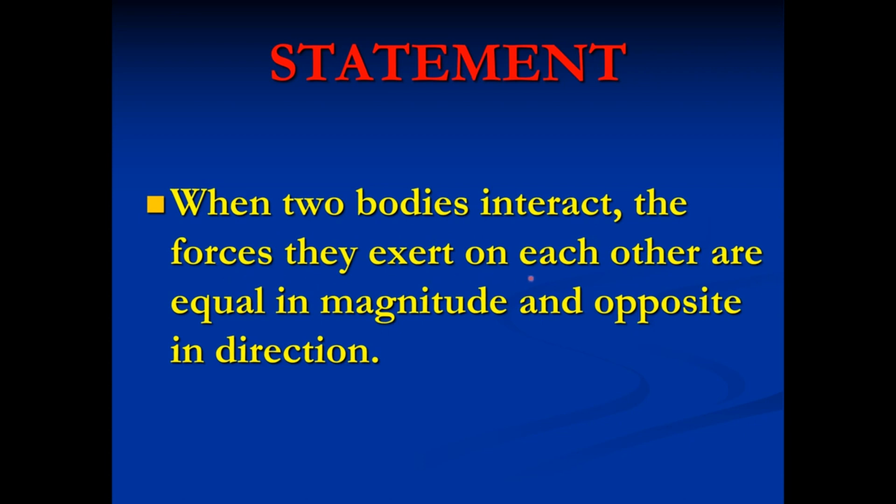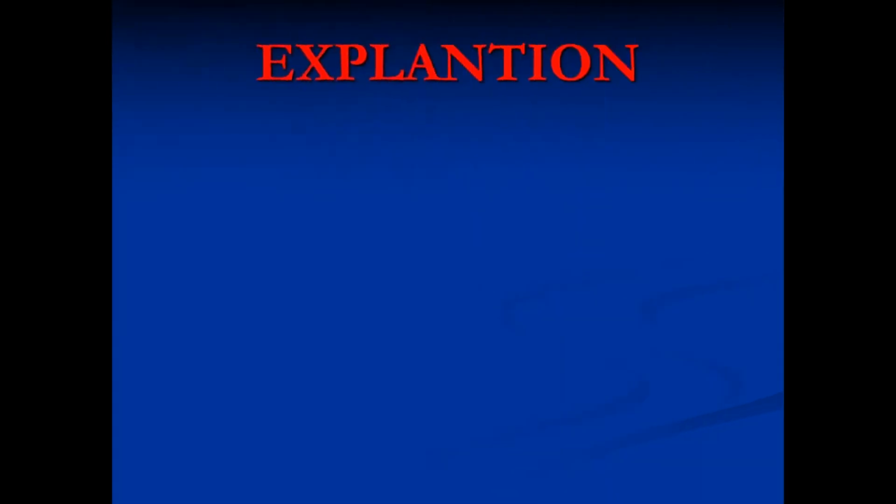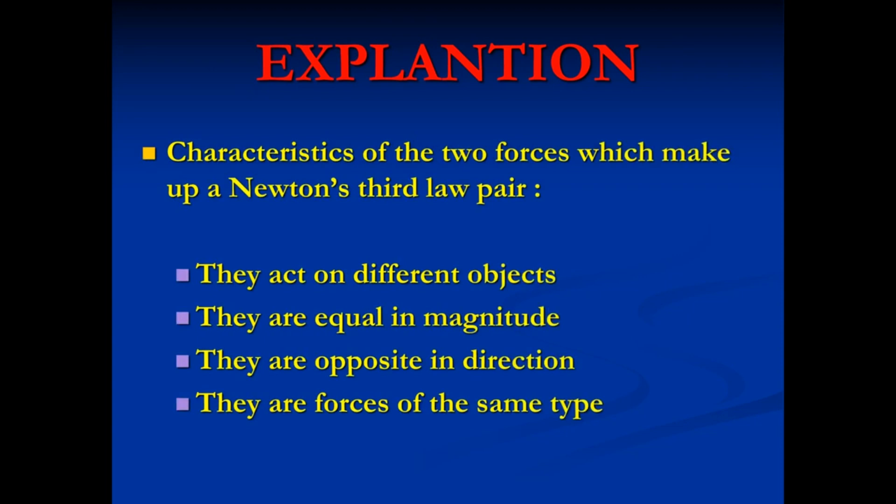Newton's third law of motion states when two bodies interact, the forces they exert on each other are equal in magnitude and opposite in direction. Now explanation: characteristics of the two forces which make up a Newton's third law pair are these four - number one they act on different objects, they are equal in magnitude, they are opposite in direction, they are forces of the same type.